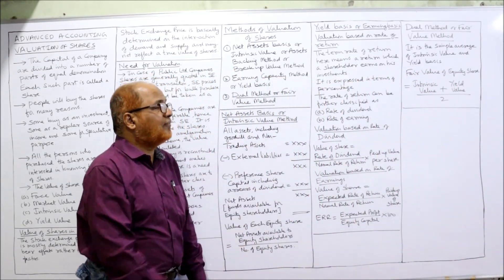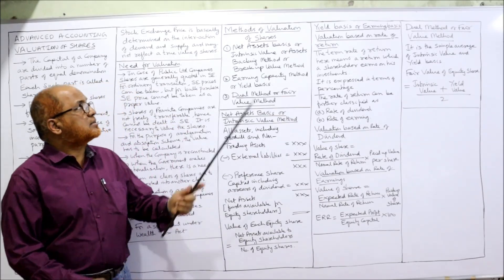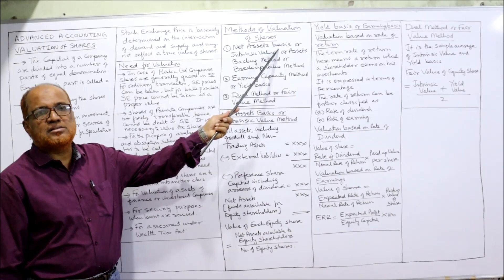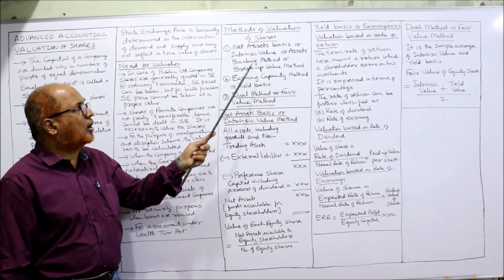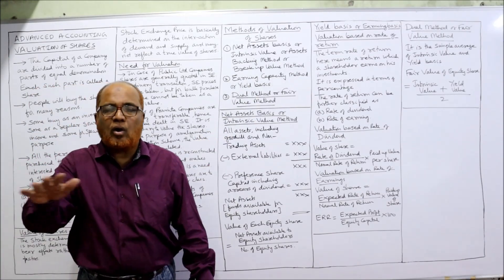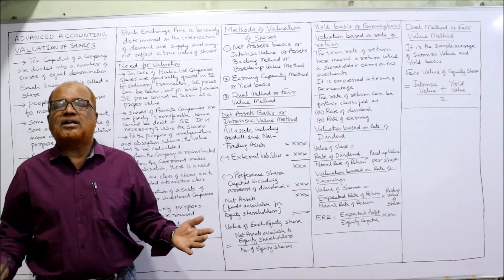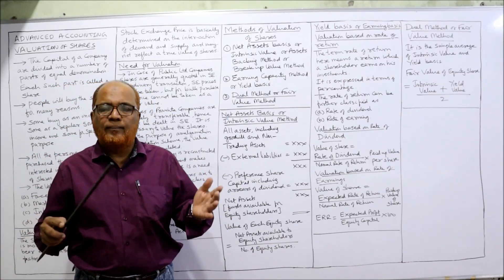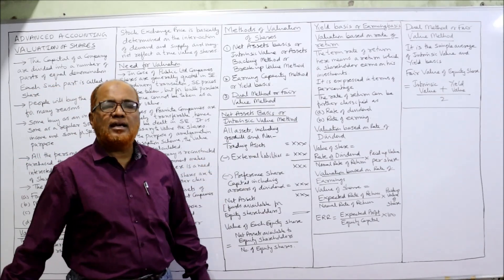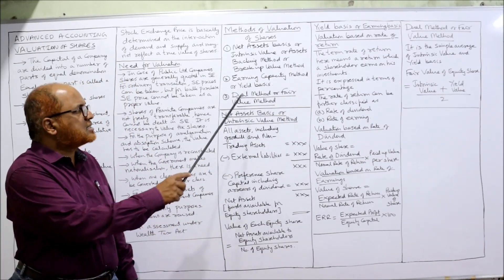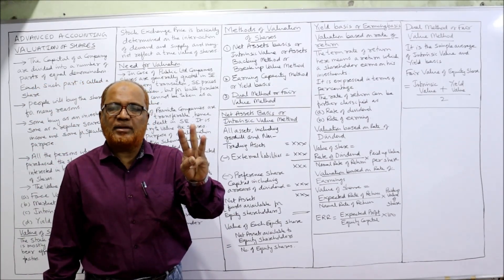There are three methods of valuation of shares. The first is the net assets basis, also called intrinsic value basis, assets backing method, or breakup value method — all these are synonymous terms. The second method is the earning capacity method. The third and last method is the fair value method or dual value method.